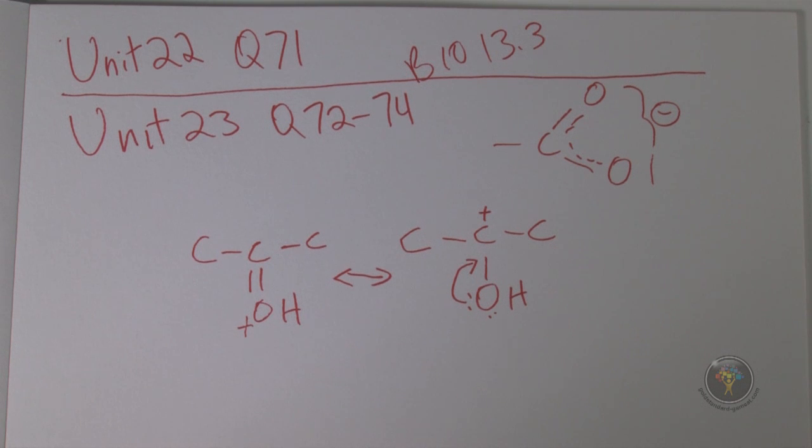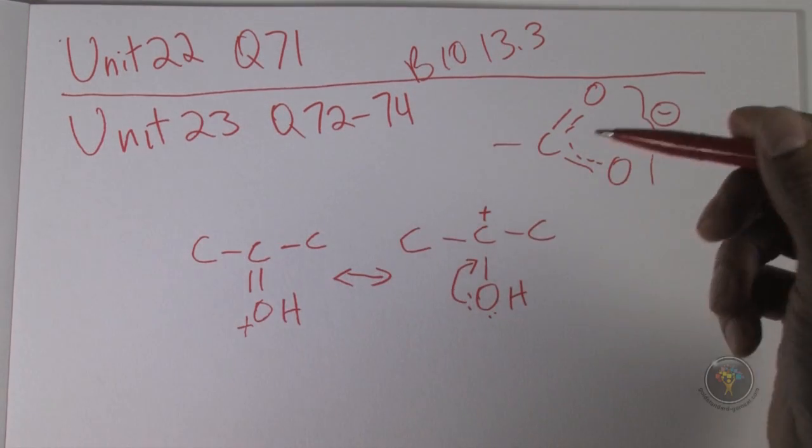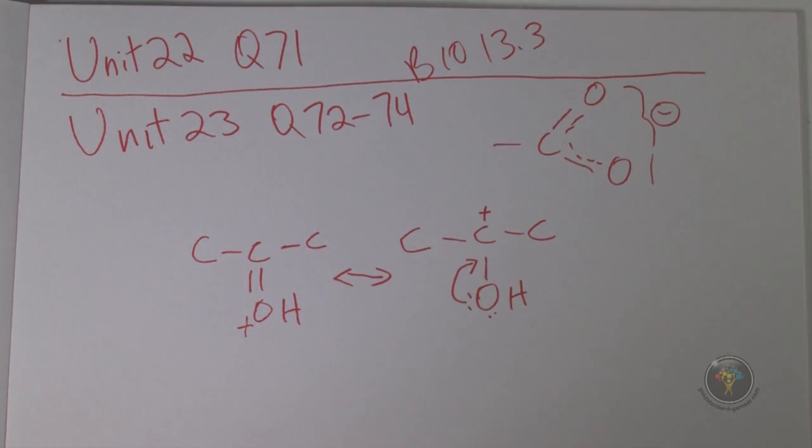Question 73: consider the resonant structures 1, 2, and 3 shown below. Which one is the major contributor to the real structure? This is easy because they gave us the rules before. One of the rules they said is to have a complete octet. So an octet is to have 8 electrons, and that's what the atoms will prefer to have.